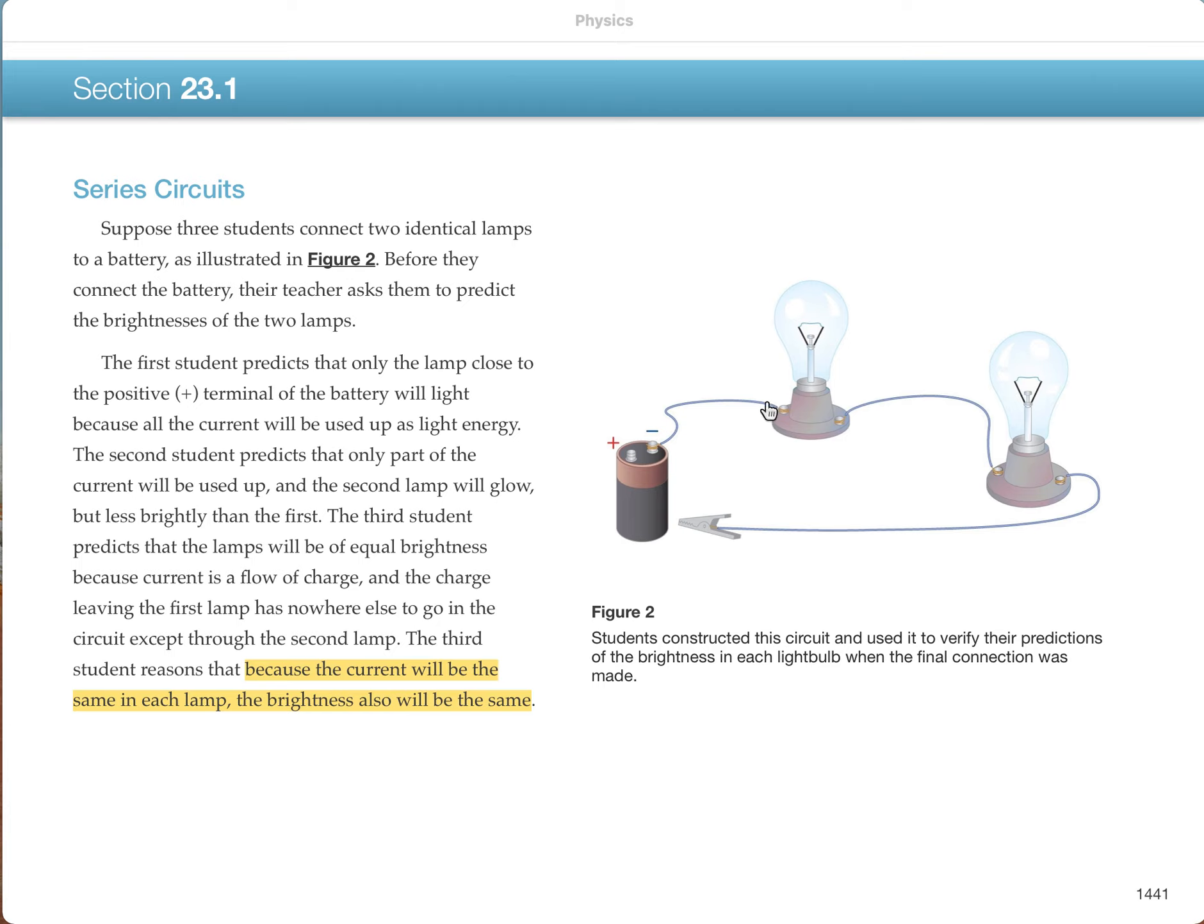A simple series circuit is one where things are hooked up one after the other in one big loop. When there's only one loop, there will only be one current. And since both the bulbs in this example have the same current, they will have the same brightness.